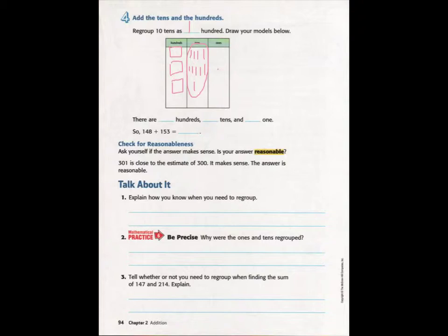Here are the 100 I had from the 148 and the other 100 from the 143. And of course, we had a 1 over here. This is now gone because I have regrouped them. So, now there are 300's, there are no 10's, and there is 1, 1. So, 148 and 153 is equal to 301.